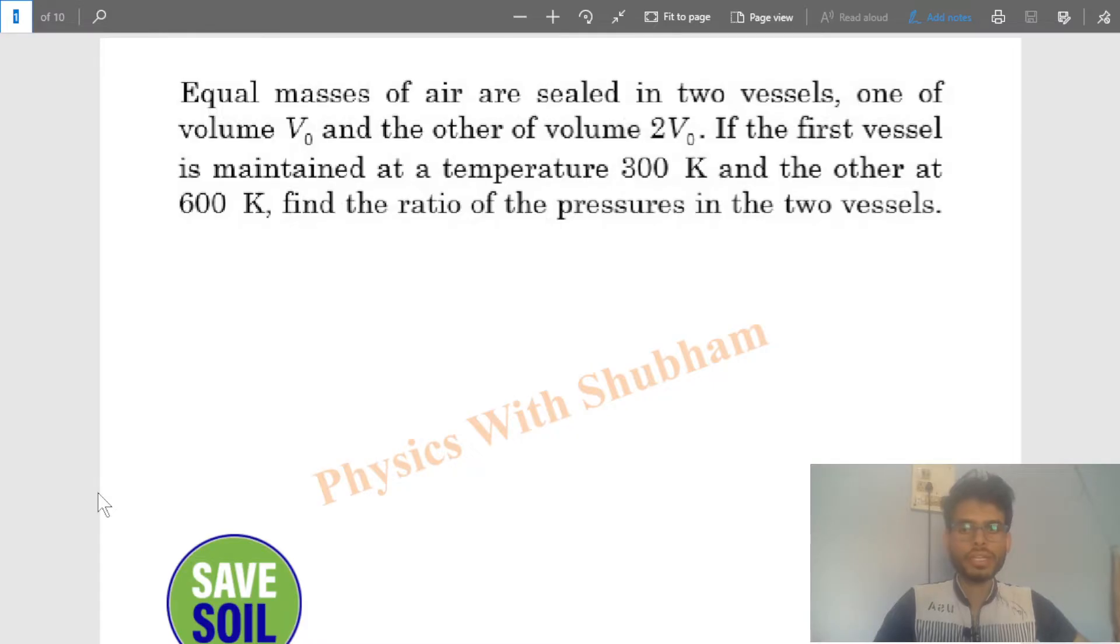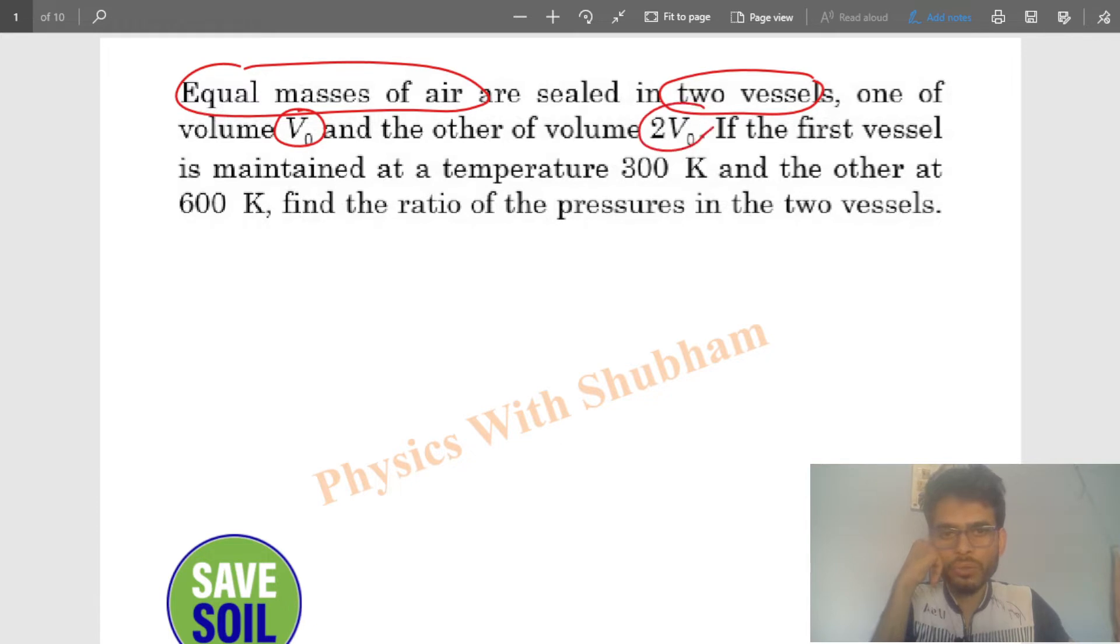Hi everyone, today let's discuss an interesting problem. Equal masses of air are sealed in two vessels, one of volume V0 and the other of volume 2V0. If the first vessel is maintained at a temperature of 300 Kelvin and the other at 600 Kelvin, find the ratio of the pressures in the two vessels.